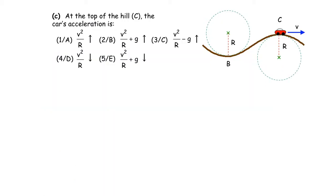Now what happens in the other case — the car at the top of the hill? We've already done this problem. Who's ever driven really fast over a hill? You feel your stomach lift up into your chest — it feels really uncomfortable. At the top of the hill, the car's acceleration in uniform circular motion is downward — towards the center of the circle — with magnitude v squared over R.